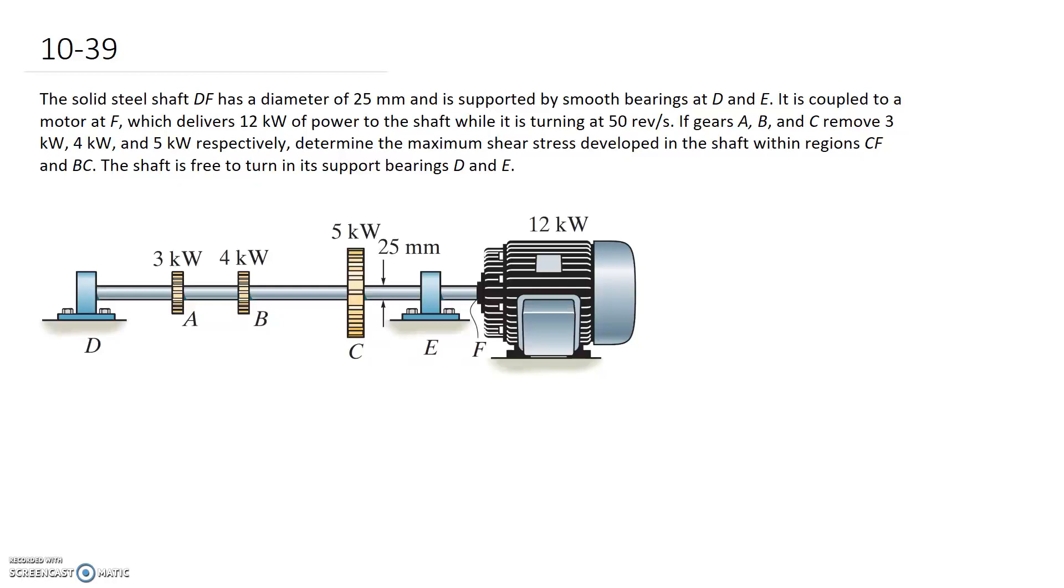The solid steel shaft DF has a diameter of 25mm and is supported by smooth bearings at D and E. It is coupled to a motor at F which delivers 12kW of power to the shaft while it's turning at 50 revs per second. Gears A, B and C remove 3, 4 and 5 kW respectively. We need to determine the maximum shear stress developed in the shaft within two specific regions, CF and BC.